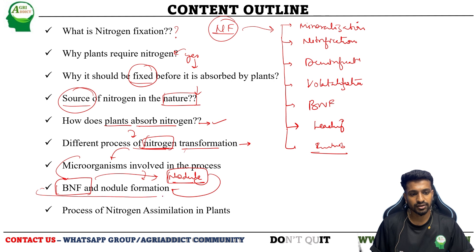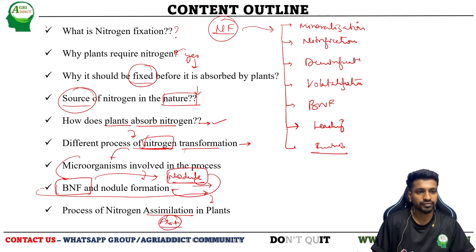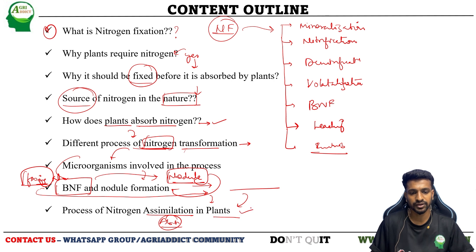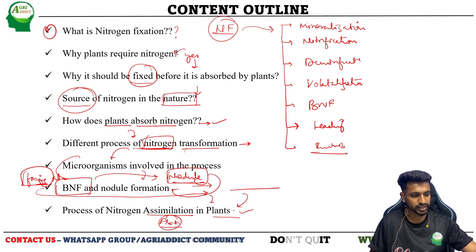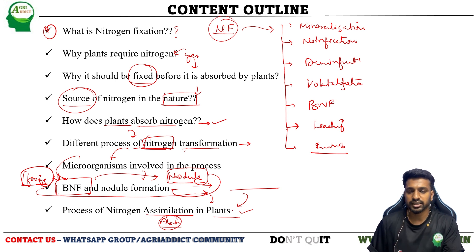Lastly, once we reach this stage, the last step would be the process of assimilation — that is, absorption. How do the plants absorb this available form of nitrogen? From the first point till fixing of nitrogen, it is about converting nitrogen into fixed form. After nitrogen is fixed in the available form, how plants are going to absorb it — this we will discuss at the end.